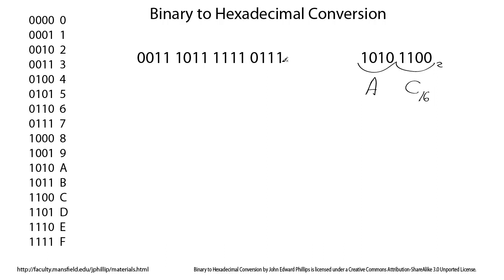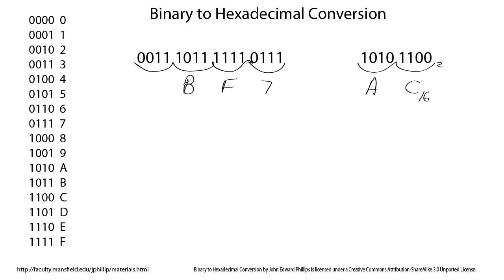Let's try another one. Here we have a 16-bit number — that would be hard to convert to decimal since the column weightings get bigger and bigger. When you convert to hexadecimal, you don't have to do that; it's much easier. Just break your number up into four bits at a time and look it up on the table. The pattern 0111 is just the number 7. Then four 1s in a row — you'll quickly memorize that one — it's the symbol F. Then 1011 — looking that up — that's the symbol B. And 0011 is just the number 3. So we've converted this binary number into hexadecimal.